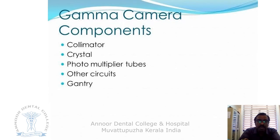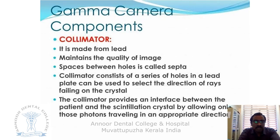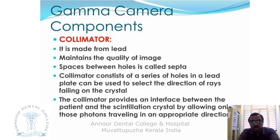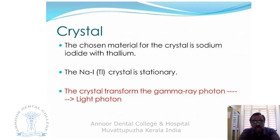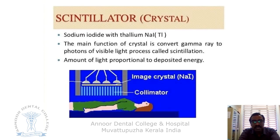The gamma camera has several components: a collimator, crystals, photomultiplier tubes, other circuits, and a gamma detector. The collimator is made of lead and maintains image quality. The spaces between the holes are called septa. The collimator consists of a series of holes in a lead plate used to select the direction of gamma rays falling on the crystals, providing an interface between the patient and the scintillation crystals. The chosen crystal is sodium iodide with thallium. It is stationary and transforms gamma ray photons to light. The crystal — the scintillator — converts gamma rays to visible light photons, with the amount of light proportional to the energy deposited.